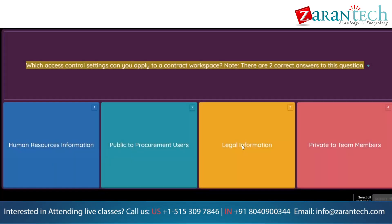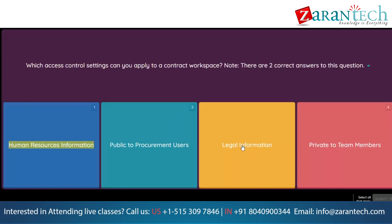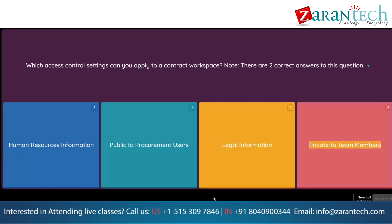Question: Which access control settings can you apply to a contract workspace? Note: there are two correct answers to this question. Option 1: Human resources information. Option 2: Public to procurement users. Option 3: Legal information. Option 4: Private to team members.